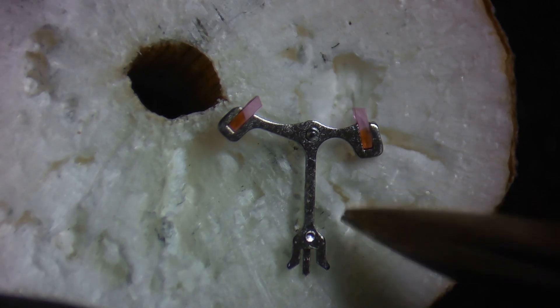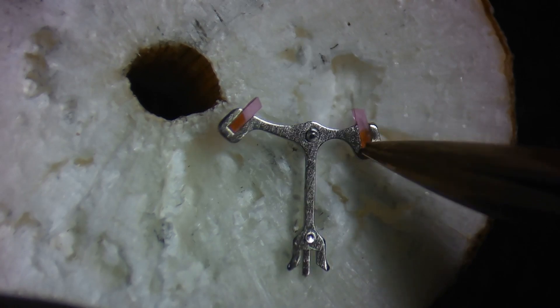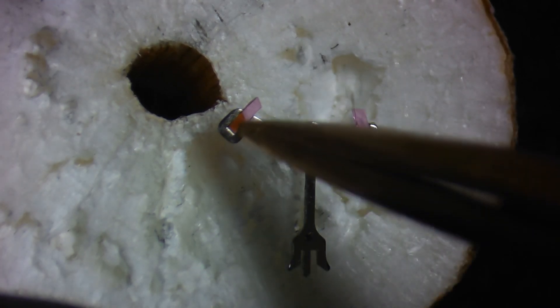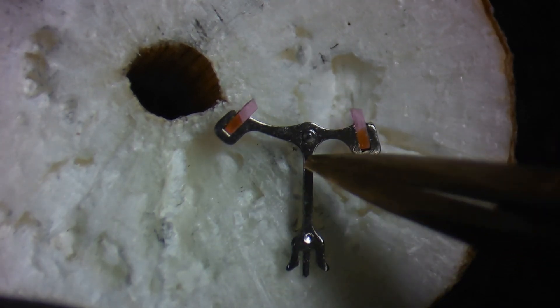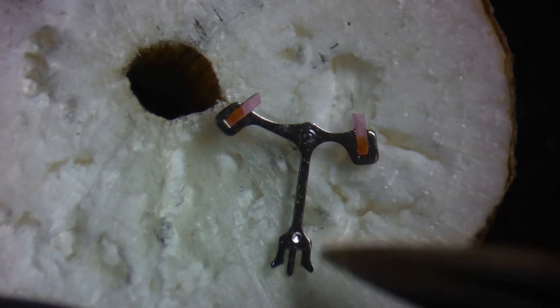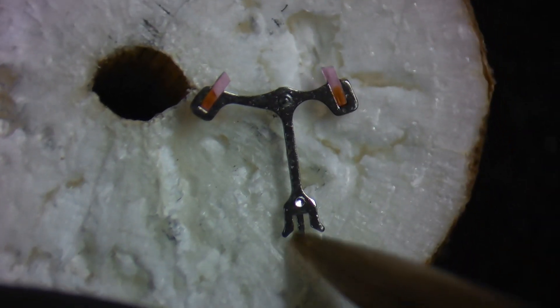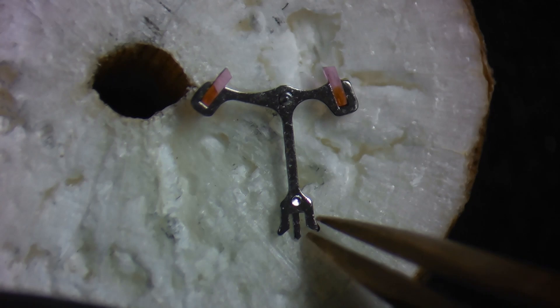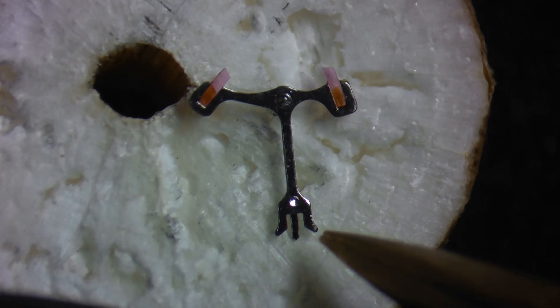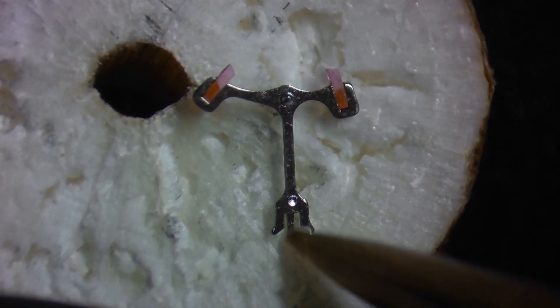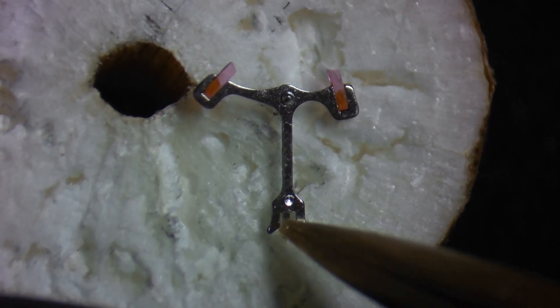So we're looking at the pallet fork as you would look at it into the movement. This pallet jewel is the entry jewel. This pallet jewel is the exit jewel. Then we have our pivots. We have our pallet fork shaft or arm. We have this area which is called the slot. And then we have our pallet fork horns. These are part of the safety system of the escapement. This area right here is where the impulse jewel sits and goes in and out of as the watch oscillates.